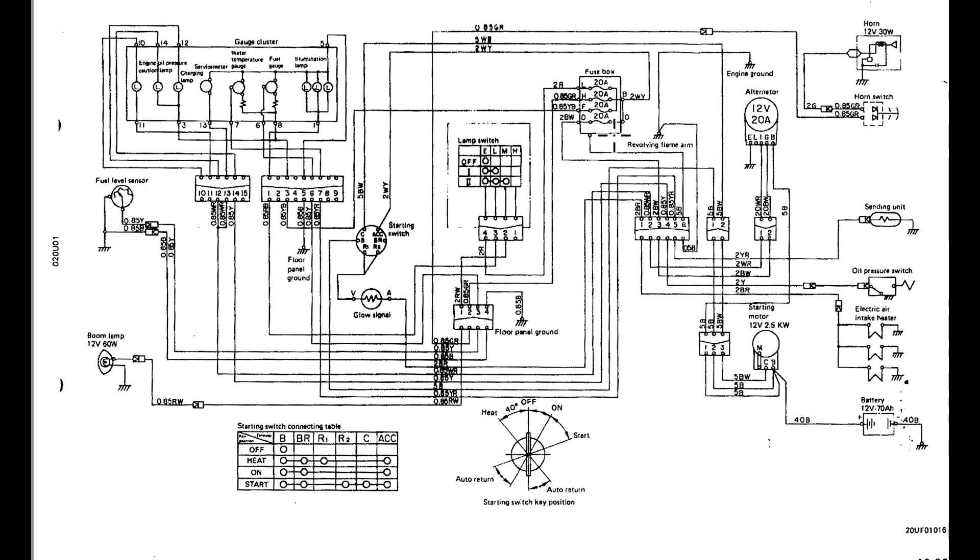If we look on top here, we have a fuse panel. If we follow that back, the wire is a two, it says Y, that would be white with a yellow stripe. And it goes over here to the starting switch. This fuse panel says there are four fuses and it says all four fuses should be 20 amps.